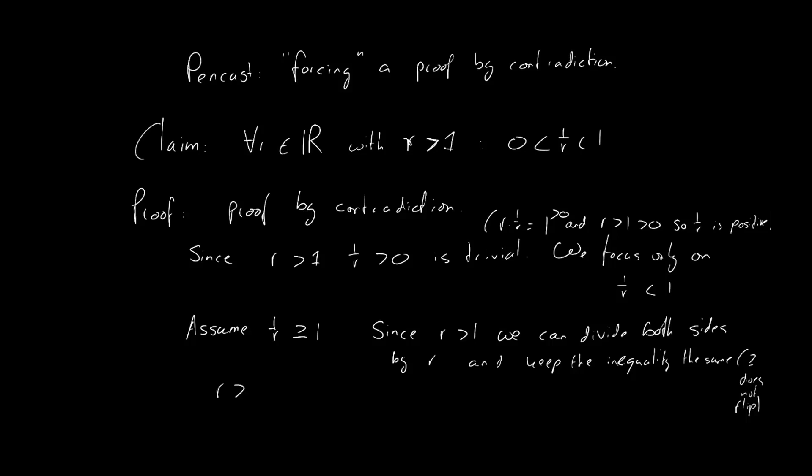So, we have 1 is larger than 1 over r. But hold on a second. That implies that 1 over r is smaller than 1. Therefore, we have a contradiction with our assumption. Therefore, we are done.